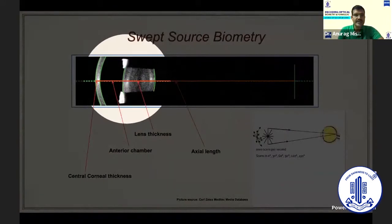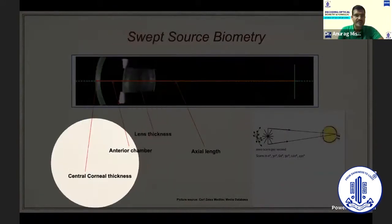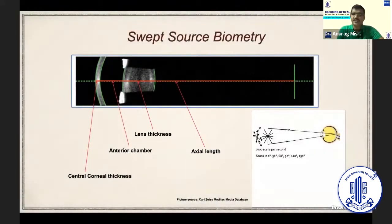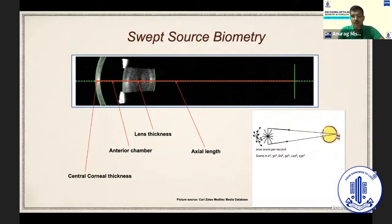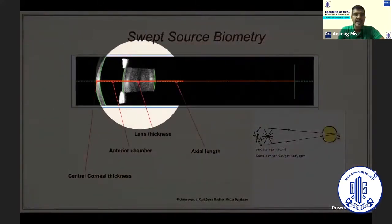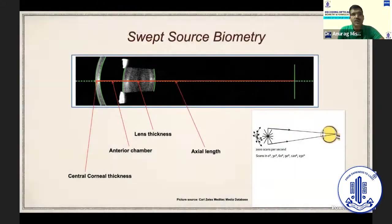So we can measure any distance, any point to any point to give us central corneal thickness, ACD, AQD, lens thickness, and axial length as well. The other thing it does is it also green marks the different semicircular contours like the anterior and the posterior lens capsules are also marked green. It has its clinical implications as you will see a little later.